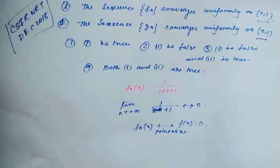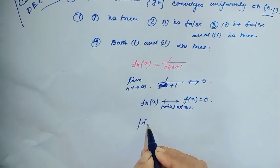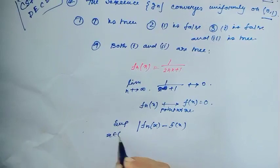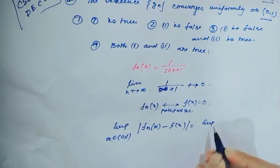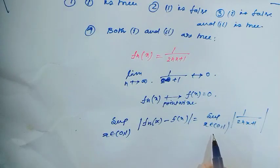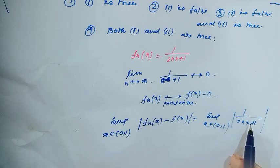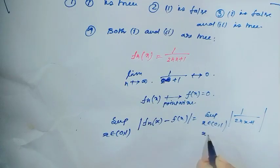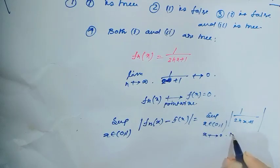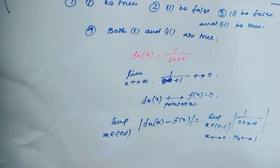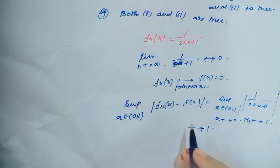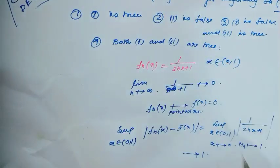Now we have to find whether this convergence is uniform. Similar to before, I will use the MN test. The supremum over x in (0, 1) of |fn(x) - f(x)| equals the supremum of 1/(2nx + 1). Since x belongs to the open interval (0,1), as x → 0 this value tends to 1. That means the supremum tends to 1, so by the MN test this sequence of functions is not uniformly convergent on (0, 1).